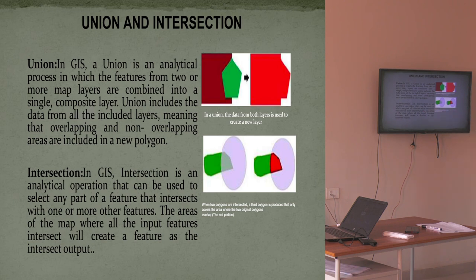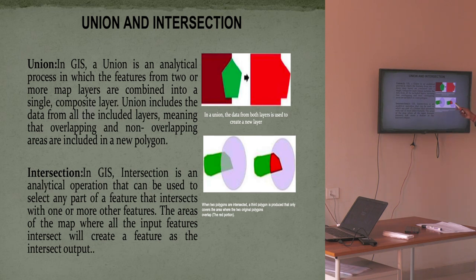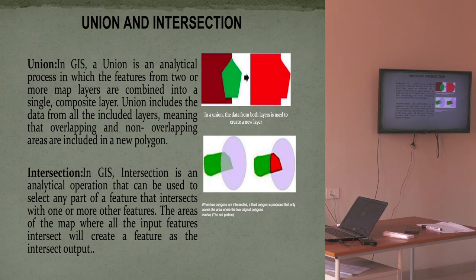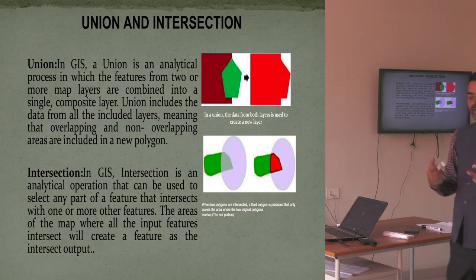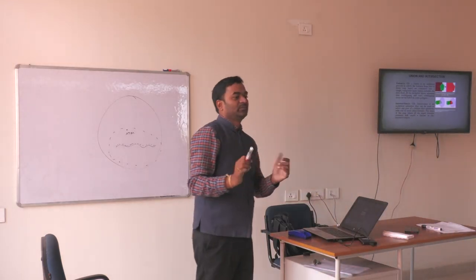Intersection means where two geographical thematic data maps overlap or match — that overlapping portion is extracted. For example, we have a drainage canal, and I want to see how much irrigated agricultural land falls within my study area from that drainage canal. In this case, we use intersection to extract how much land the drainage system is covering and where irrigation facility is available. Union combines two layers; intersection extracts the common matching area. Both tools are used for planning and monitoring — to spatially see where, when, and what is present.